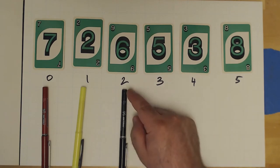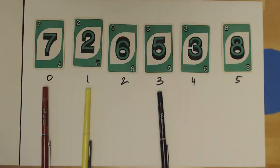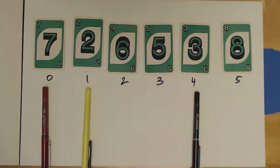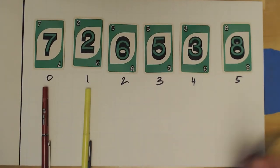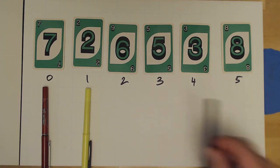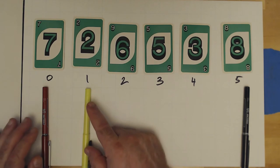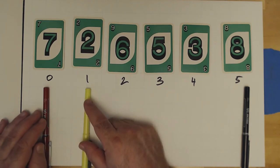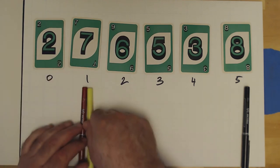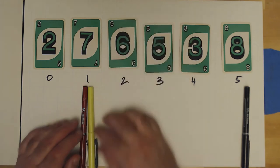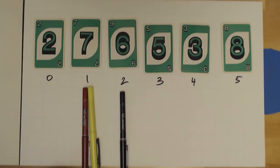We advance the black pointer to element two. Is the value at element two less than the value at element one? No — advance the pointer. Is the value at element three less than the value at element one? No — advance the pointer. Is the value at element four less than the value at element one, which is two? No — advance the pointer. Is the value at element five less than the value at element one? No, it is not. When the black pointer has reached the end, we say let's swap the values stored at the indices in the red and the yellow markers. So those two simply get swapped.